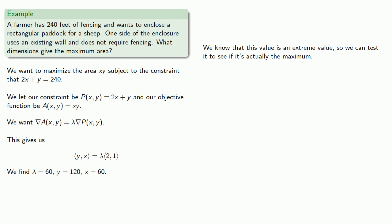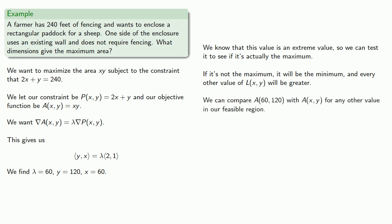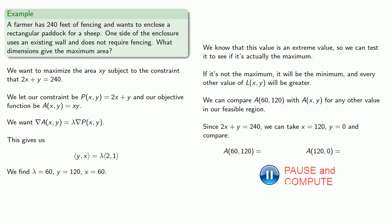And the important thing here is that, since we know it is an extreme value, it's either a maximum or a minimum. So if it's not the maximum, it will be a minimum, and every other value of our objective function will be greater. So we can compare the value at 60, 120 with our objective function for any other value in our feasible region. Now since 2x plus y must equal 240, we can take a value like, oh I don't know, how about x equals 120, y equals 0, and we can compare A(60, 120) to A(120, 0). And since this value is less, then this value can't be a minimum, so it must be a maximum.